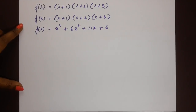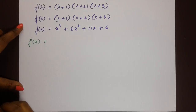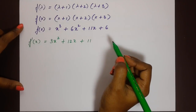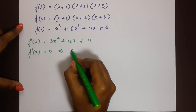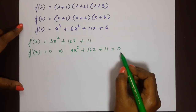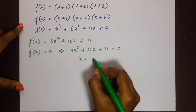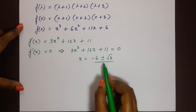To find the minimum and maximum values we find the derivative. f prime of x equals 3x squared plus 12x plus 11. Setting f prime of x equal to zero: 3x squared plus 12x plus 11 equals zero. Solving using the quadratic formula, x equals minus 6 plus or minus root 3, all over 3.